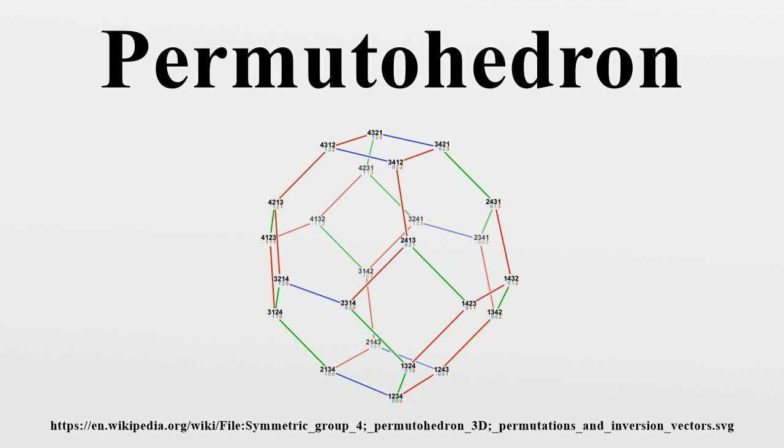History. According to Ziegler, permutohedra were first studied by Schoute. The name permutohedron was coined by Guilbaud and Rosenstiehl. Regarding this coinage, they write that the word permutohedron is barbaric, but easy to remember, and that they submit it to the criticism of their readers.